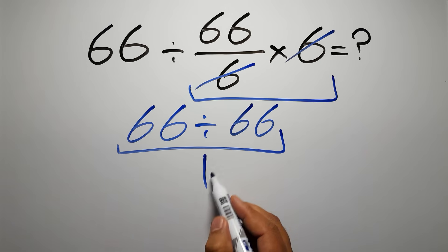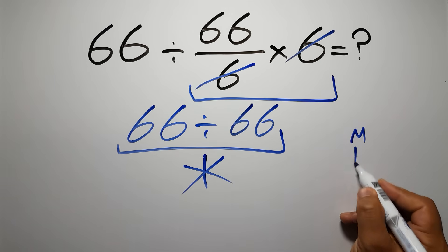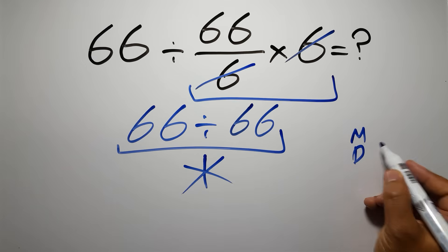But this answer is not correct. Because according to the order of operations, multiplication and division have equal priority and we have to work from left to right.